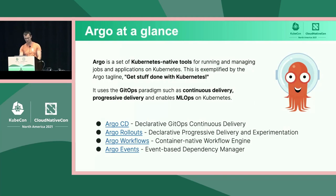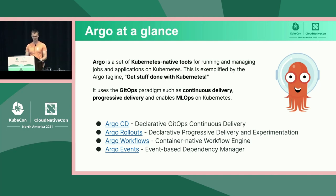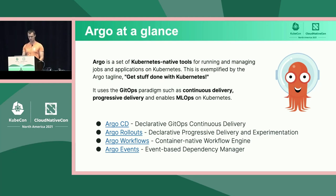Now we can get to the topic. As Remington mentioned, we want to speak about notifications in Kubernetes and Argo. You might already know that Argo is not a single product — it's a family of projects. We currently have four, and it's really important for us that every project is focused on a single use case.